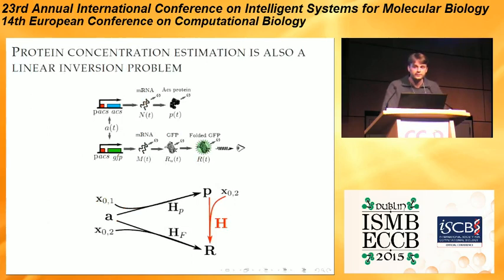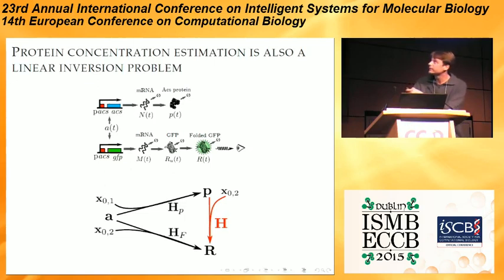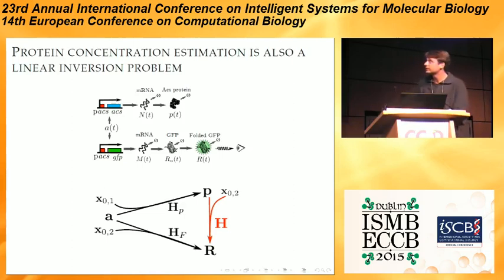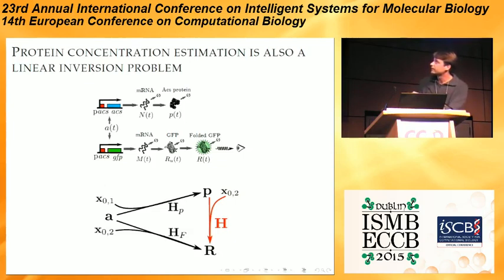For protein concentration estimation, it's not more complicated. The promoter activity of the reporter gene is linked in a linear way to the observed fluorescence. You have the same system for the original gene on the chromosome — it has the same promoter activity, and this activity is linked in a linear way to the concentration of protein inside the bacterium. So it's possible to construct a linear relationship between the concentration of protein you want to estimate and the fluorescence you observe.